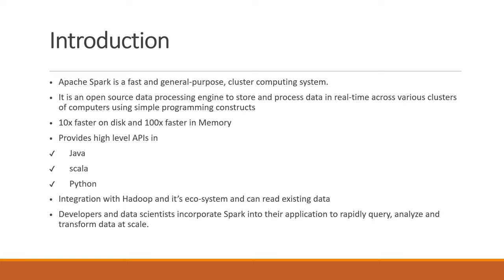Coming to the introduction of Spark: Apache Spark is a fast and general-purpose cluster computing system. It is an open-source data processing engine to store and process data in real time across various clusters of computers using simple programming constructs. It is 10x faster on disk and 100x faster in memory. It provides high-level APIs in Java, Scala, and Python. It integrates with Hadoop and its ecosystem and can read data from existing systems. Developers and data scientists use Spark to rapidly query, analyze, and transform data at large scale.